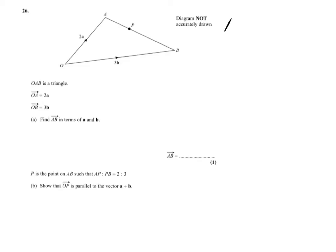So first of all, we've got to find A to B. From A to B using the vectors, we're going to have to go this way and then across like that. So we've gone against the 2A, so that's going to be minus 2A, and then we've gone with the 3B. So the answer there for one mark is minus 2A plus 3B, which can be written as 3B minus 2A.